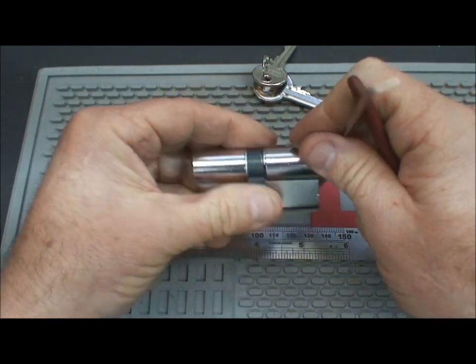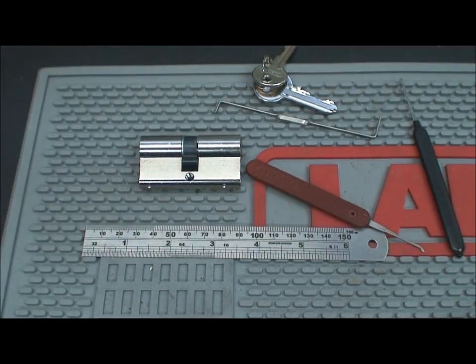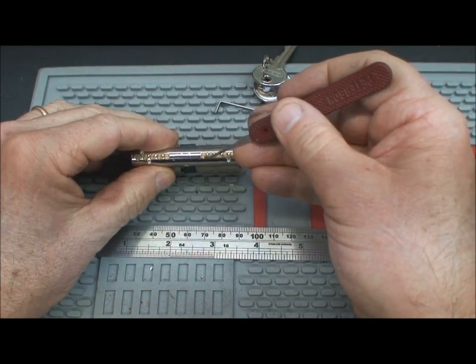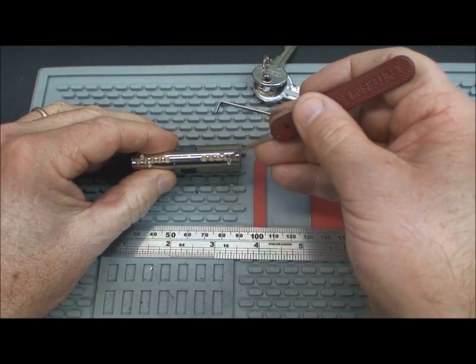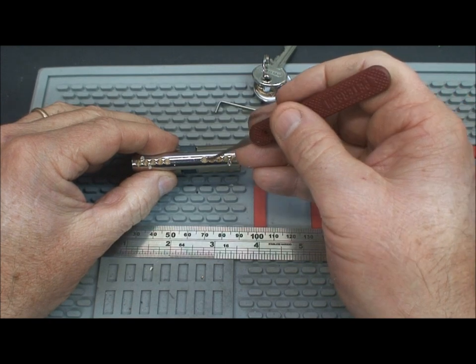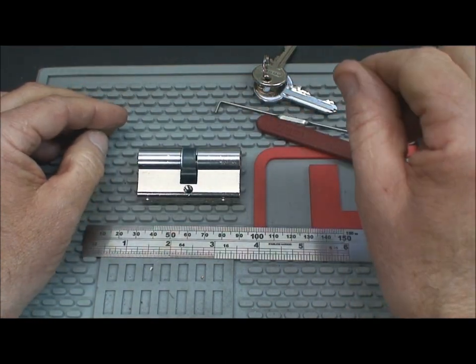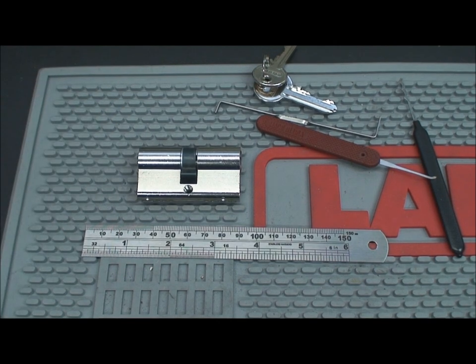All right, that is the ABUS C83. It's a good lock. Good training lock. If you want to learn security pins without having to reset and set, you know, a hundred times as with the titaliums or with some of the other Abuses. Five pins are a good way to go. You can build your skills very, very quickly. Thank you for your time. Everybody stay safe and stay legal.